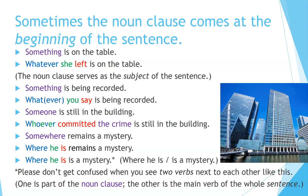'Somewhere remains a mystery.' 'Where he is remains a mystery.' Extra word: 'where.' Subject: 'he.' Verb: 'is.' That's the noun clause, which is part of the full sentence. We can also say 'Where he is is a mystery.' You need to know how to divide the noun clause from the rest of the sentence. Please don't get confused when you see two verbs next to each other like this — it looks strange, but it is actually correct. One is part of the noun clause; the other is the main verb of the whole sentence.